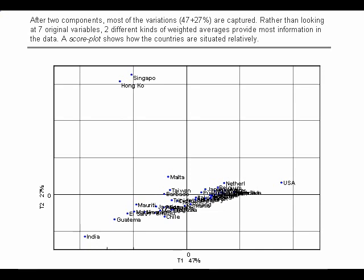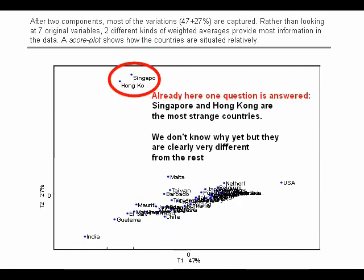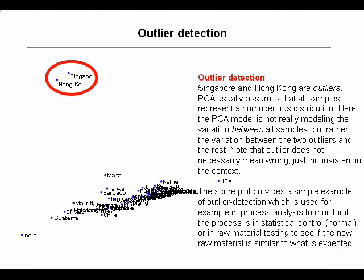The first thing we note is that there are two countries that are very different from the other ones. That means we have already answered one of the initial questions. If we want to see what samples are most different or most strange, that has to be Singapore and Hong Kong. They are clearly different from the other ones. This is an example of outlier detection — Singapore and Hong Kong are outliers, meaning that they are different from the bulk of the data.